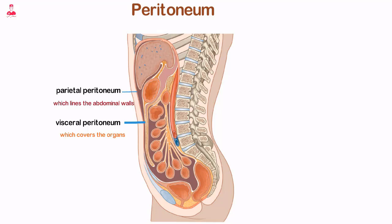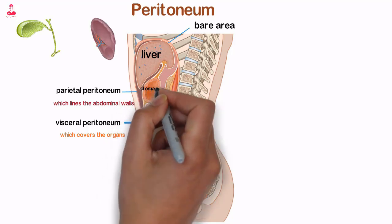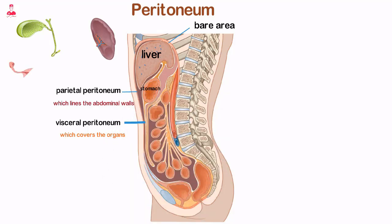The peritoneum forms a cavity that encloses the following organs of the abdomen: liver (except for the bare area), gallbladder, spleen, stomach, ovaries, and the majority of the intestines.